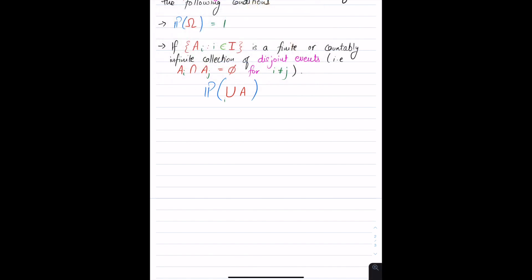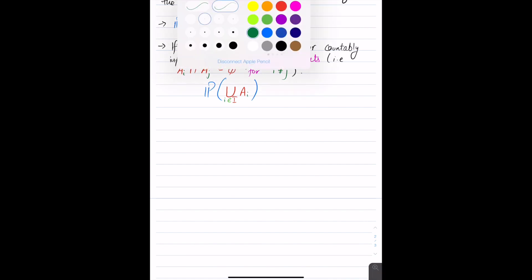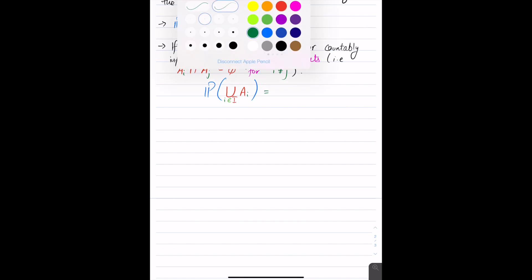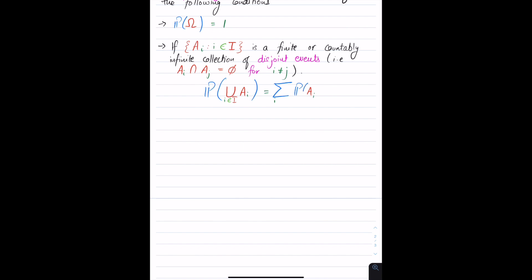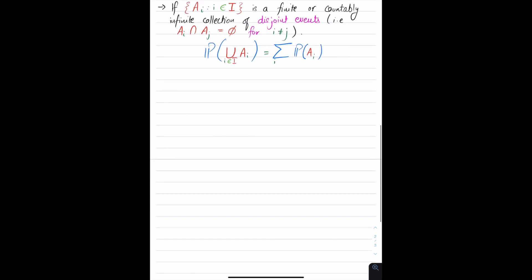And if that is the condition then we have that the probability of the union of A_i for i in I equals the summation of i in I of probability of A_i. And that's pretty much it.